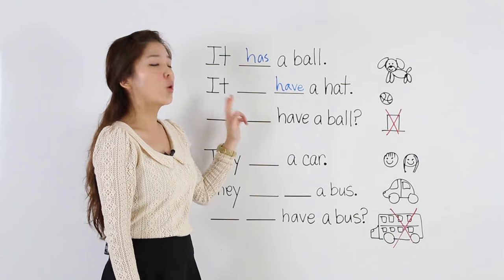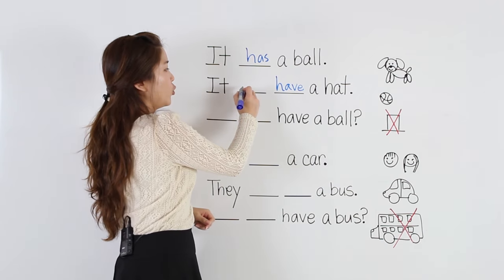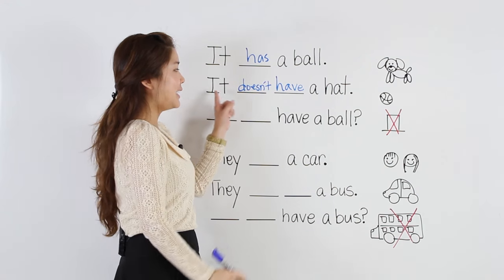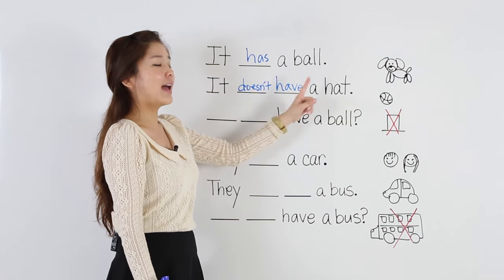Doesn't or don't? For it, we say doesn't. It doesn't have a hat.